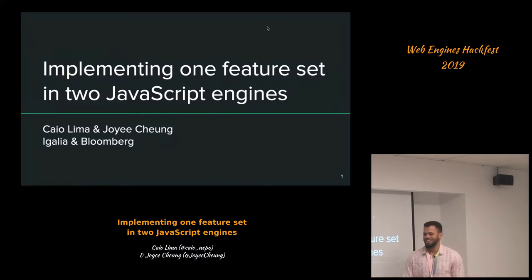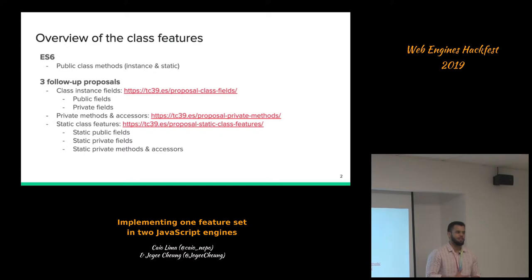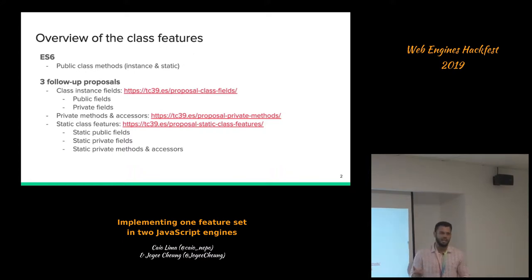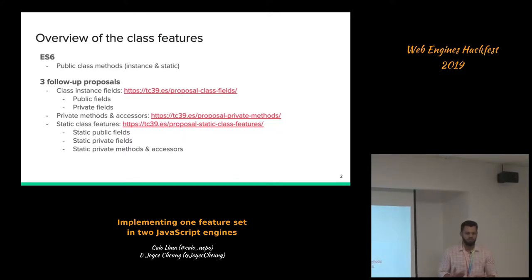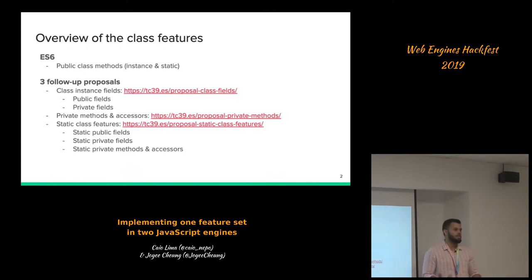This work was done in collaboration with Bloomberg. Classes were introduced in JavaScript back in ES6, and they had the concept of methods and also accessors. In ES6 we have public methods and accessors, both instance and static. The new class features proposal in ECMAScript is basically a follow-up of this class semantics and syntax, introducing class instance fields — public fields and private fields — as well as private methods, private accessors, and static class features including static public and private fields and static private methods.